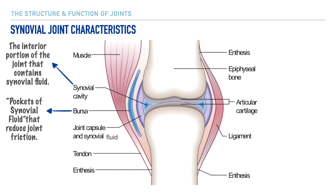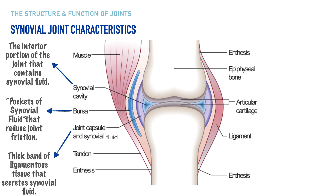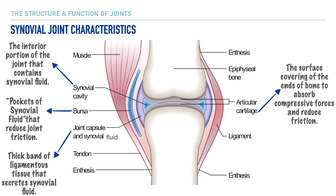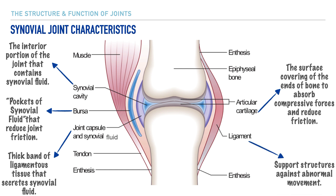Next is the joint capsule. This capsule is a thick band of ligamentous tissue, and its purpose is to provide stability and support to the joint. Its role is also to secrete synovial fluid so that the joint is well lubricated. The articular cartilage covers the ends of the bone, absorbs compressive forces during movement, and helps reduce friction. And lastly, the role of ligaments is to protect the joint against abnormal joint movement.